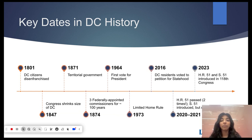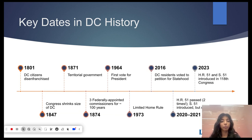In 1871, following the Civil War, Congress established a territorial government for DC in an attempt to allow local government. But when they saw that Black men were running for seats in the legislature, among other reasons, they abolished the territorial government. And in 1874, established a governing commission of three presidentially appointed commissioners that lasted for a hundred years.